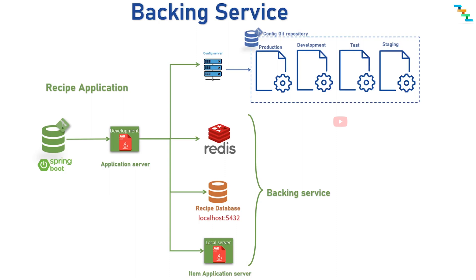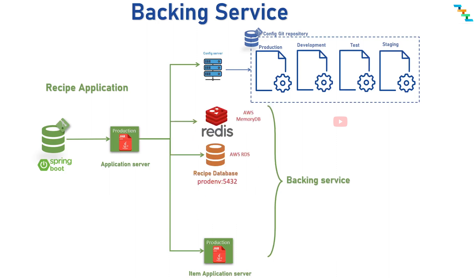When the application moves to production, it needs to start consuming Postgres in AWS RDS and AWS MemoryDB for Redis and Items API, without making any change in the application codebase, by using the production configuration. This makes it possible to change the backing service in production without modifying application code.